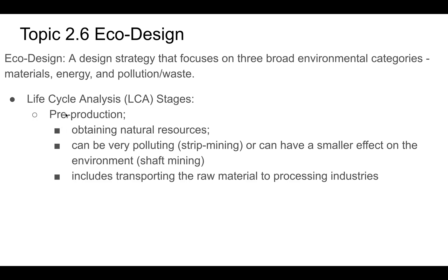Life cycle analysis begins with pre-production — obtaining natural resources. This can be very polluting, like strip mining, where they dig a big hole and strip off layers of rock and soil, or it can have a smaller effect like shaft mining, where they dig a tunnel into a mountain. We also include transportation of raw materials to where they're processed — for example, from the mine to the smelter, or from where a tree is cut down to the lumber mill.